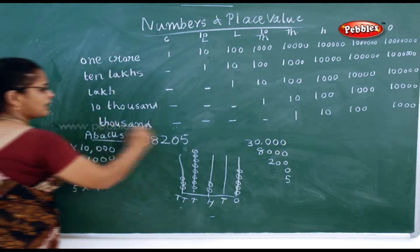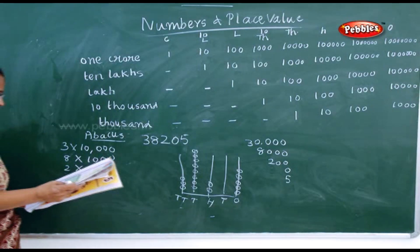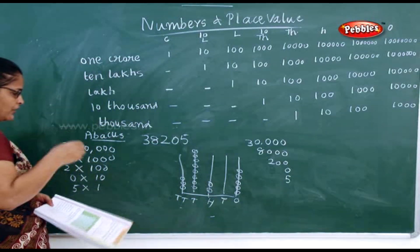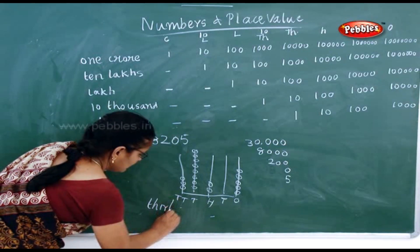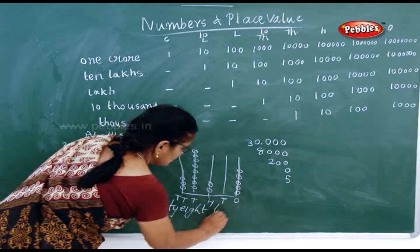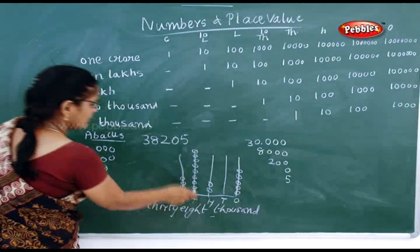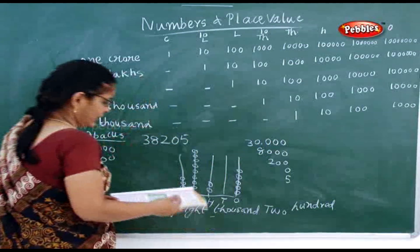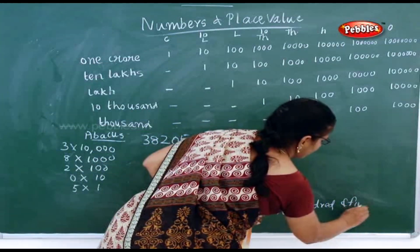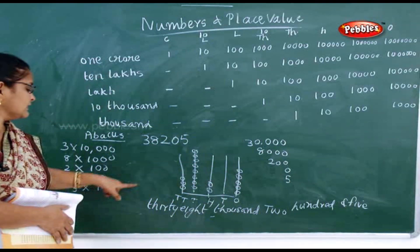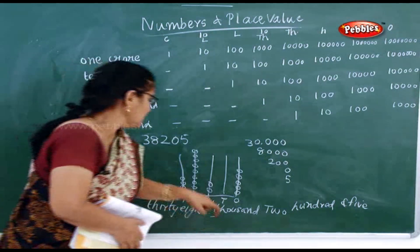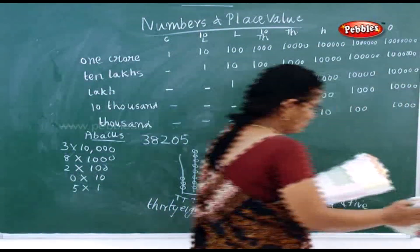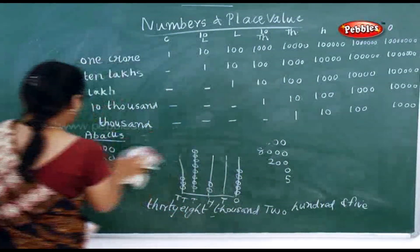Now how will you write 38,205 in words? You write: thirty-eight thousand, two hundred and five. That is 38,000 + 200 + 5, and 38,000 means 30,000 + 8,000.